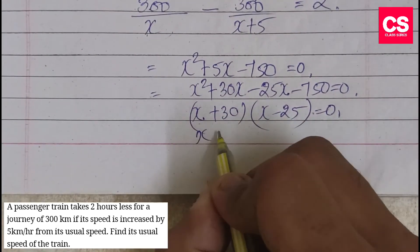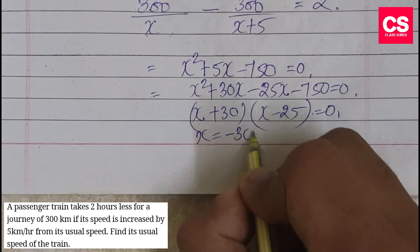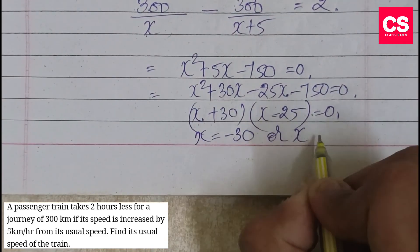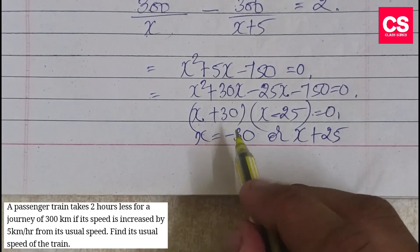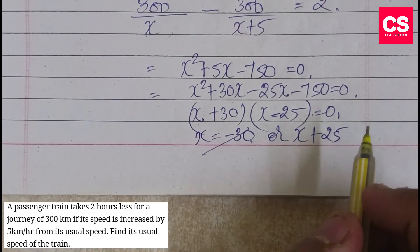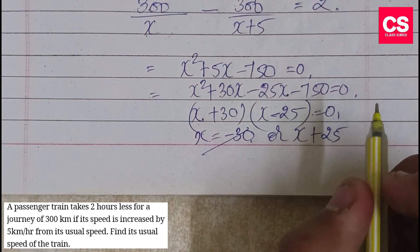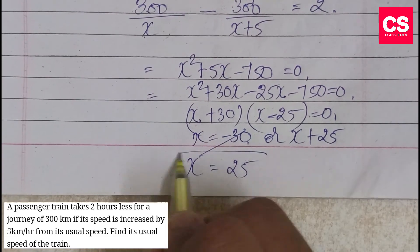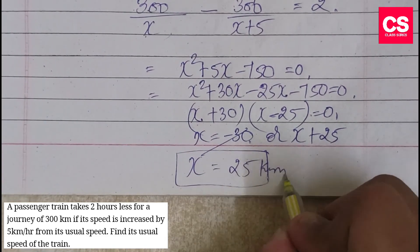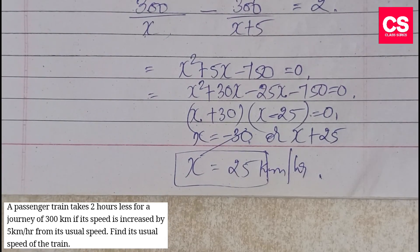This will be x = -30 and x = +25. Always ignore the negative sign. Find the usual speed of the train, what was the normal speed? So basically x = 25, 25 km per hour. This is your answer.